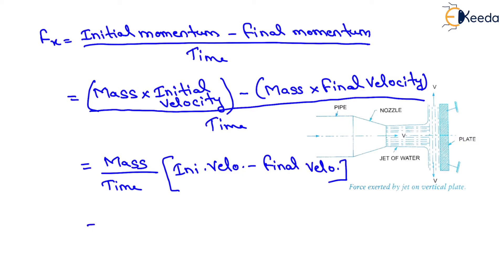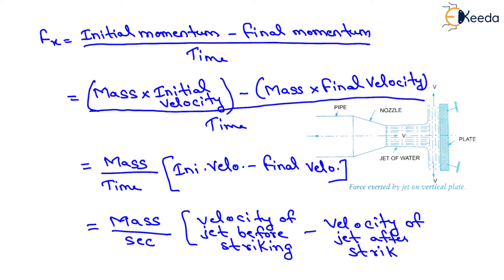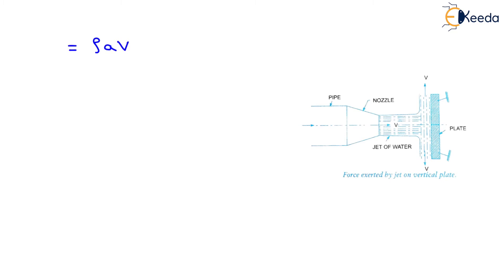If we write this in another form, that is mass per second into velocity of jet before striking minus velocity of jet after striking. Now we know that mass per second will be equals to rho into a into v. So we will write it as rho into a into v, and velocity of jet before striking will be equals to v and velocity of jet after striking will be equals to 0. So it will be equals to rho a v squared, that is the force exerted by the jet on the plate in the direction of the jet, that is fx.